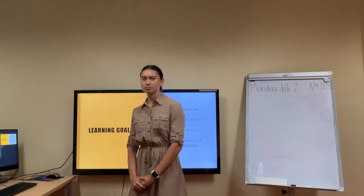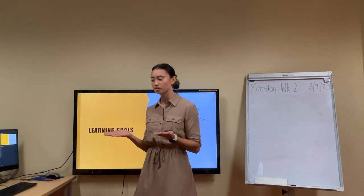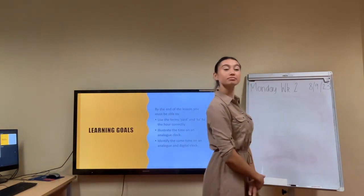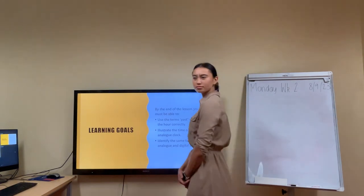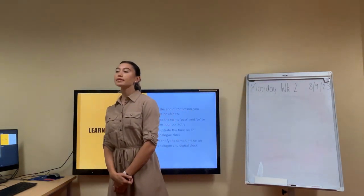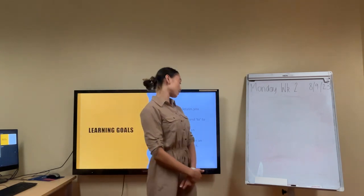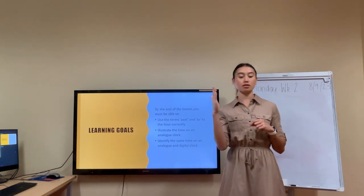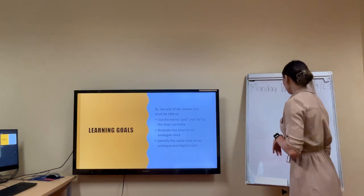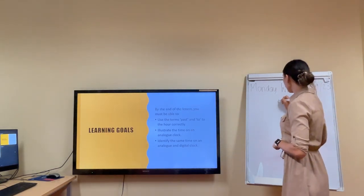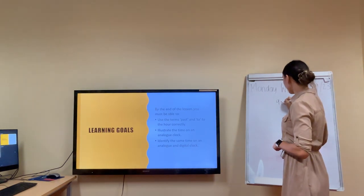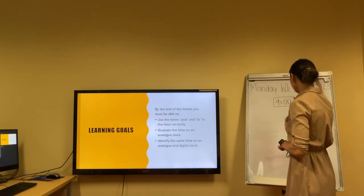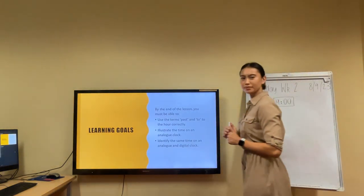Now with that last learning goal, analogue clock, digital clock, a clock is just a clock. So what is the difference between an analogue clock and a digital clock? Does anyone know? Yes, so the digital clock is the electronic one, the one that shows the two dots in the middle to show the hour and the minutes. So this is how we do it. For example, we are starting today at 9 o'clock. So this is a digital one.